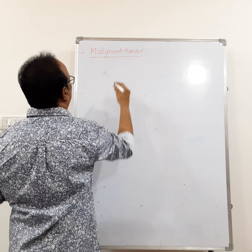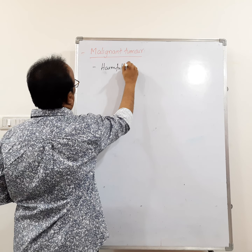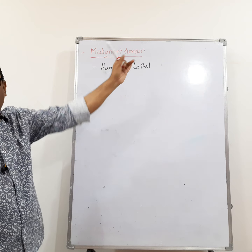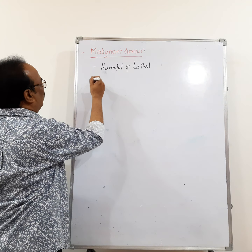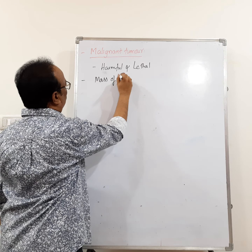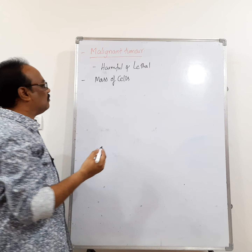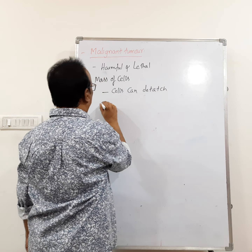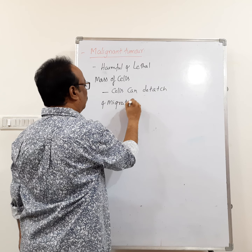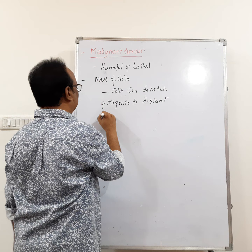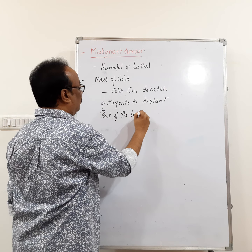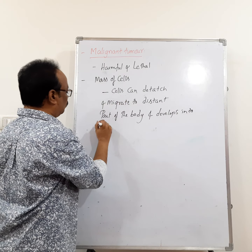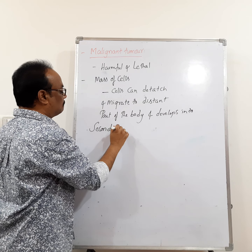The third type is the malignant tumor, which is harmful and lethal — lethal means it causes death. In malignant tumors, cells from the mass of tumor cells can detach and migrate to a distant part of the body, where they develop into secondary tumors.